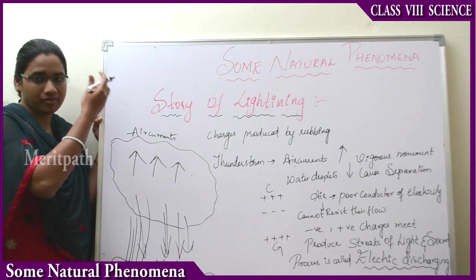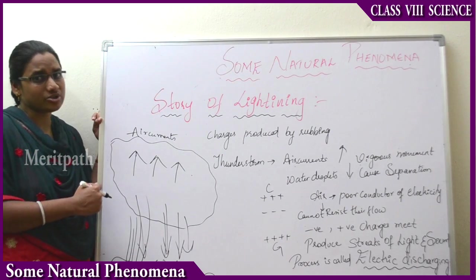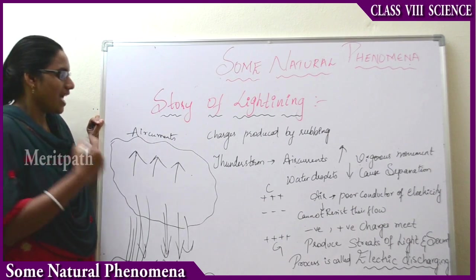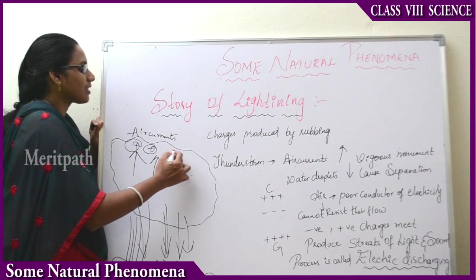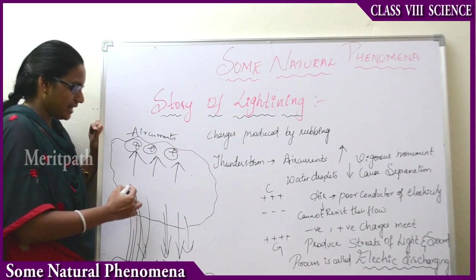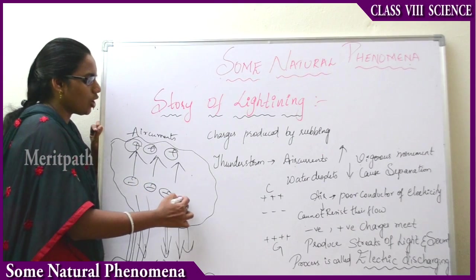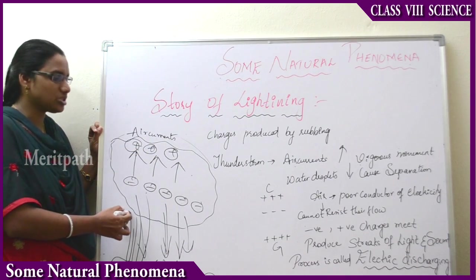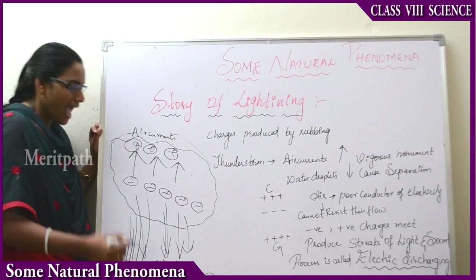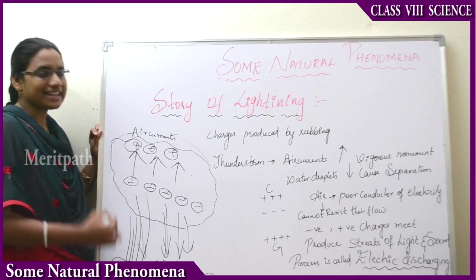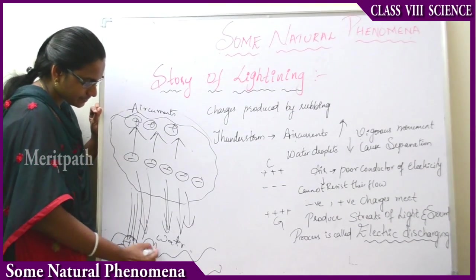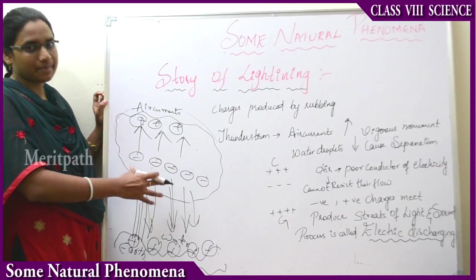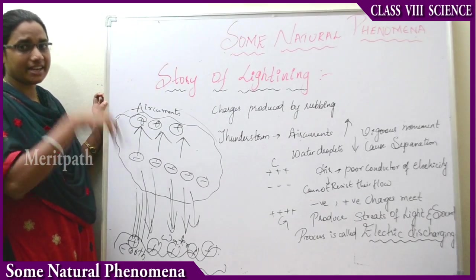This vigorous movement — air currents moving upward and water droplets moving downward — results in the separation of charges. Positive charges attend the upward side and negative charges attend the lower side of the cloud. Thus, positive charges occupy the upper surface and negative charges occupy the lower surface of the clouds. The earth surface also carries positive charge particles on its surface.